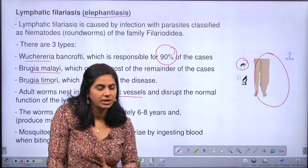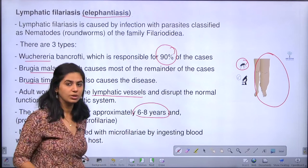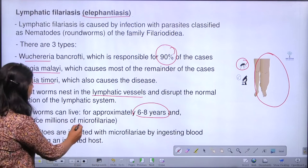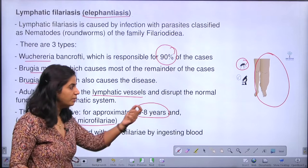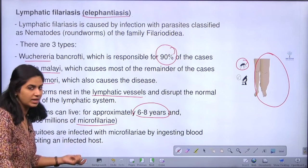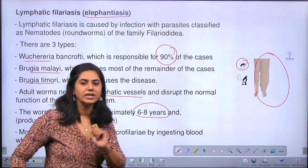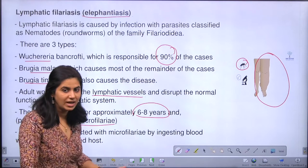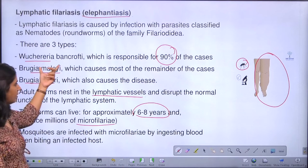A single worm of Wuchereria can stay around six to eight years in a human host. During this time, they produce thousands of microfilariae. When a mosquito bites an infected person, these microfilariae are taken into the mosquito's body, and the mosquito acts as a vector and transmits the disease. This is what filariasis is, and it is mainly caused by Wuchereria, which accounts for around 90% of cases.